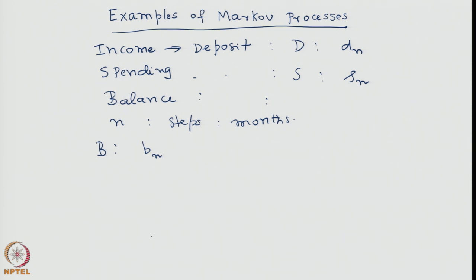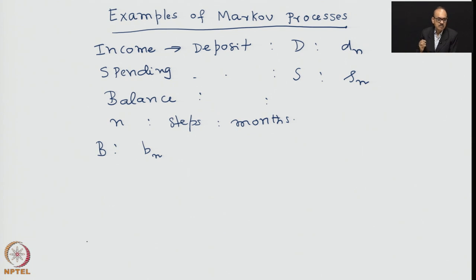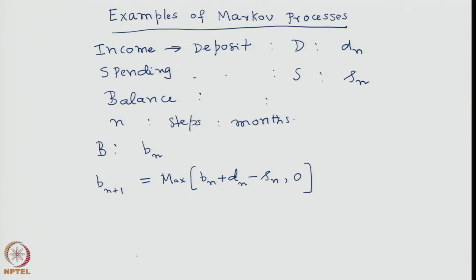The bank balance goes on changing. If in the previous month one had B_n units of bank balance, depending on how much was deposited and how much was spent, the net difference adds to the bank balance, and it is made sure that it cannot be negative. So we assume only a one-sided random walk in the balance or money space. We can write B_{n+1} = max(B_n + D_n - S_n, 0), subject to the constraint that the net should not go below zero.